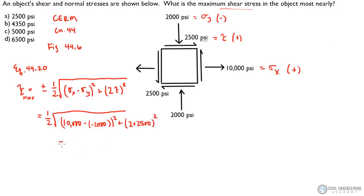So, what does that get you? If you solve for this, punch it in your calculator, you get an answer here, 6,500 PSI, and that is the max shear stress in the object.